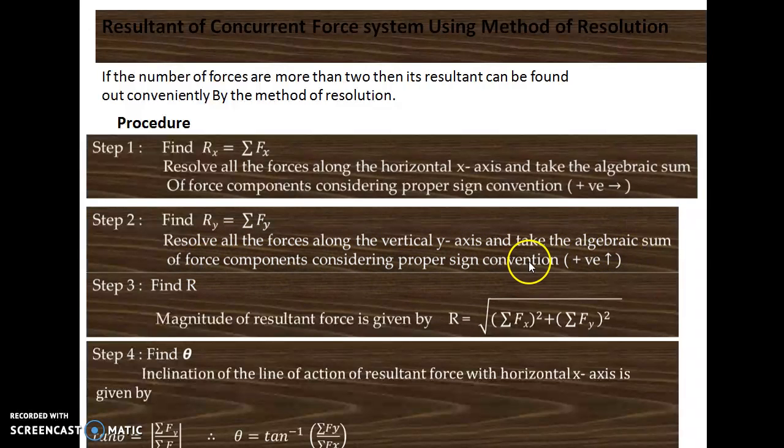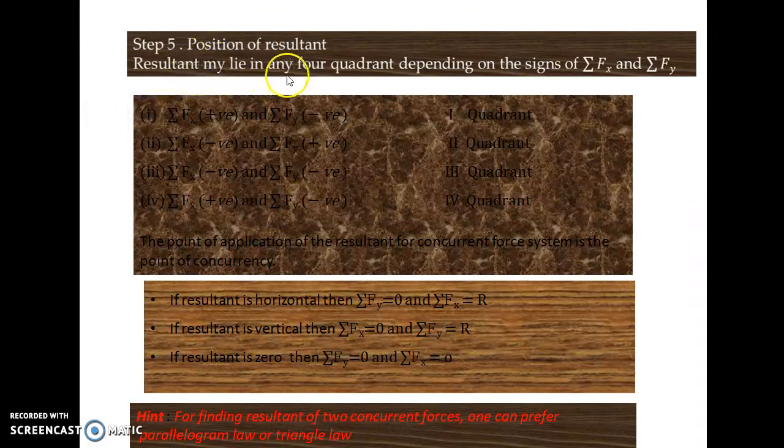Step three: Find R. Magnitude of resultant force is given by R equal to root of sigma Fx square plus sigma Fy square. Step four: Find theta. Inclination of the line of action of resultant force with horizontal axis is given by tan theta equal to sigma Fy by sigma Fx, and theta equal to tan inverse of sigma Fy by sigma Fx.